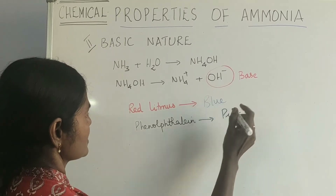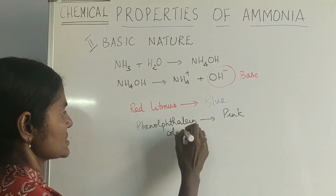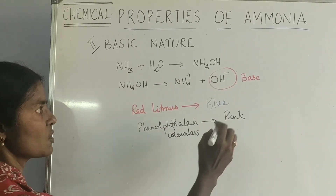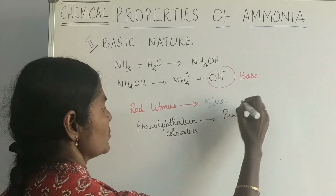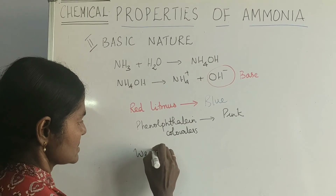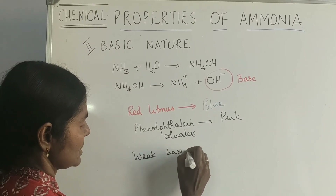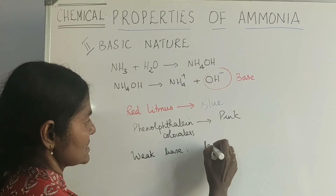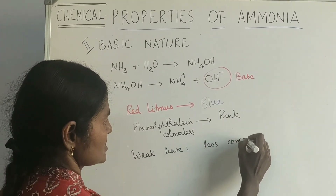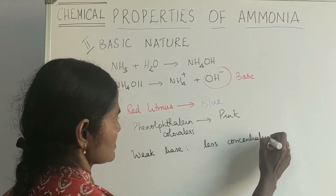To prove that ammonium hydroxide is a weak base — why do we call it a weak base? Because the concentration of hydroxyl ions is less.